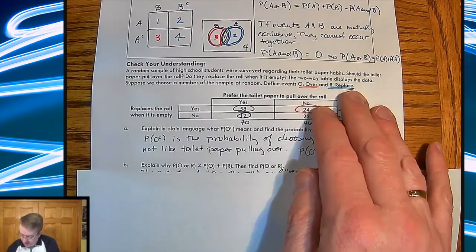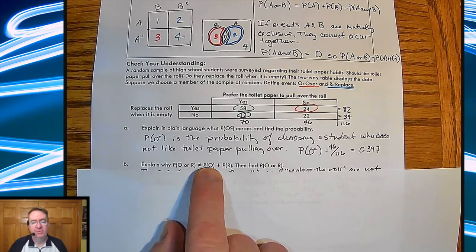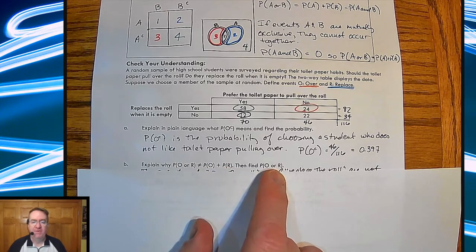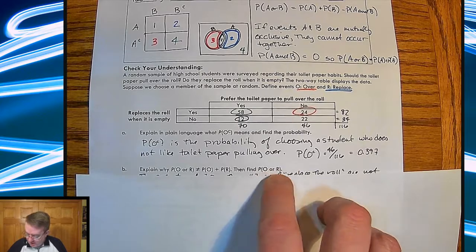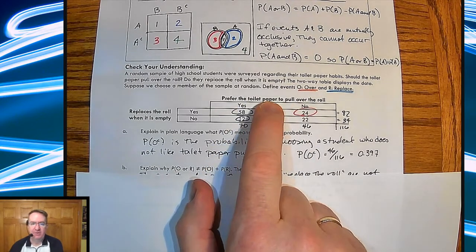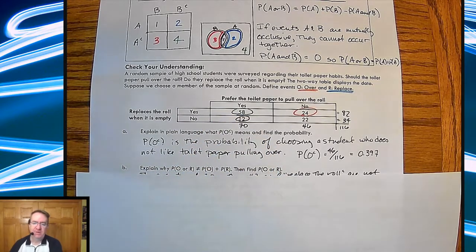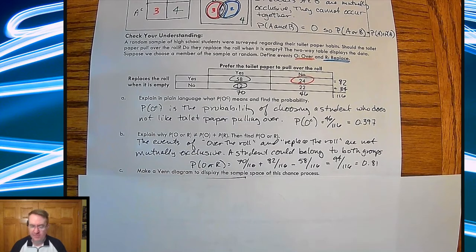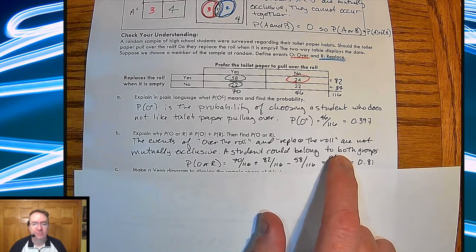Explain what P of O or R. Explain why probability of over or replacing the roll is not equal to the probability of over plus the probability of replacing the roll, and then find what P of O or R. For things to be mutually exclusive, and this isn't always the case, but more often it is two sides of the same characteristic. Can you have it in two different characteristics? Yes, but there is definitely overlap here, and so that's the reason why this doesn't work. The events of over the roll and replace the roll are not mutually exclusive because a student could belong to both groups. In fact, 58 of them do.